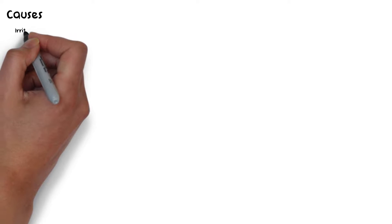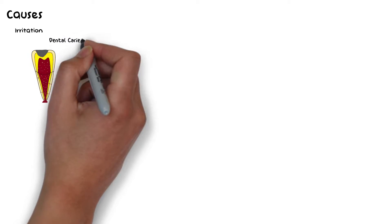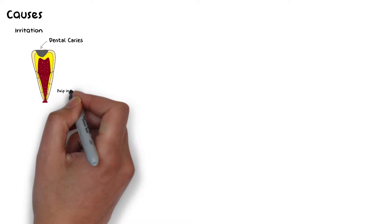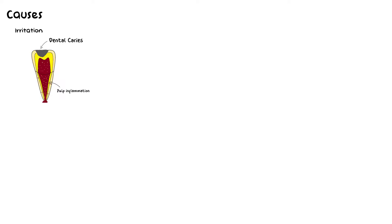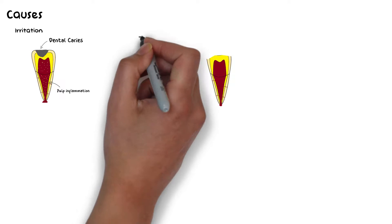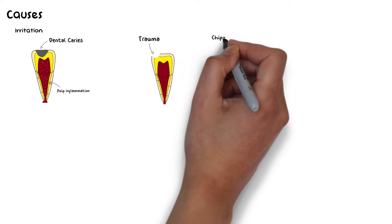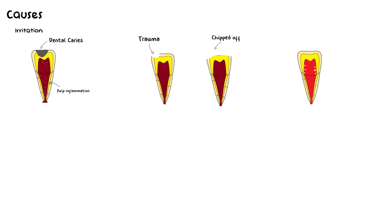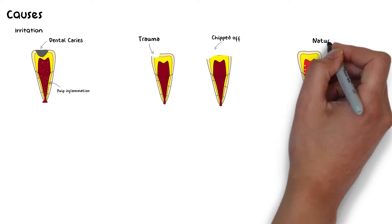Causes of pulp calcification can vary. Some literature suggests that they may occur as a result of some sort of irritation, such as dental caries, which causes pulpal inflammation, and therefore sometimes pulp calcification can also be a consequence of pulpal inflammation. Calcification can also occur as a result of trauma, maybe some sort of mechanical injury, or they may even occur naturally in some individuals as a natural process of aging.